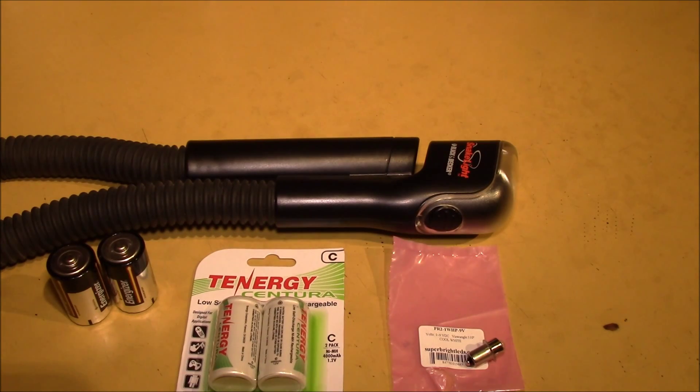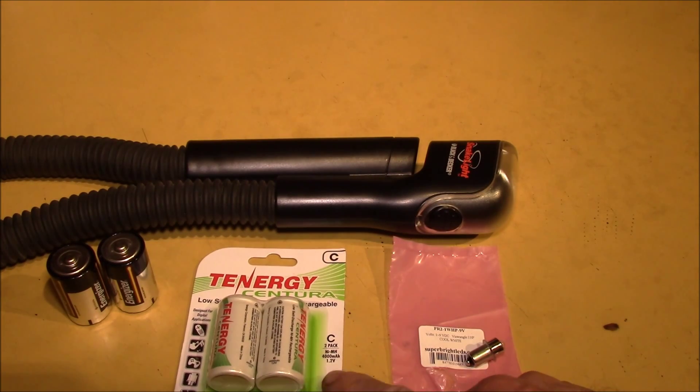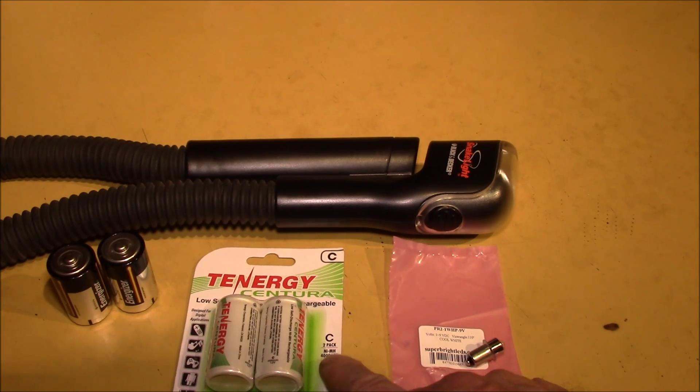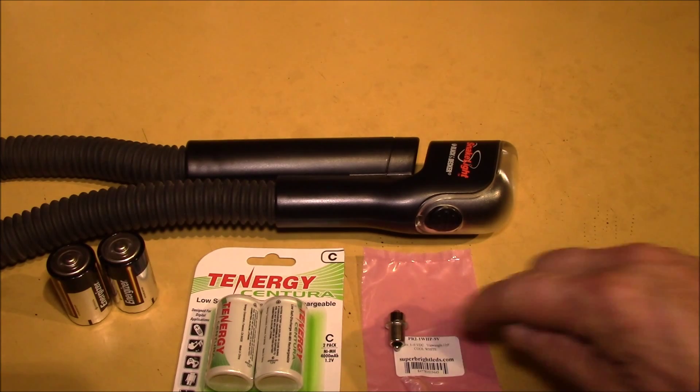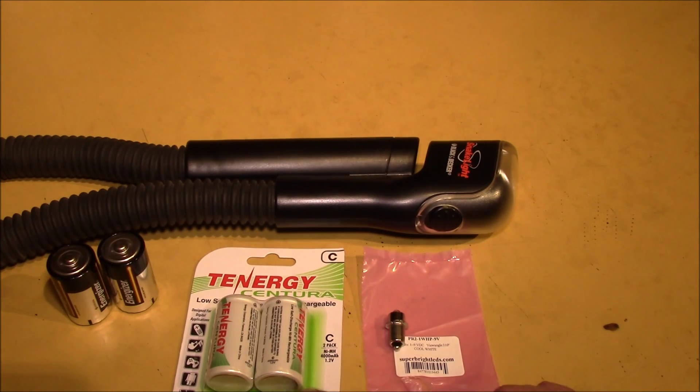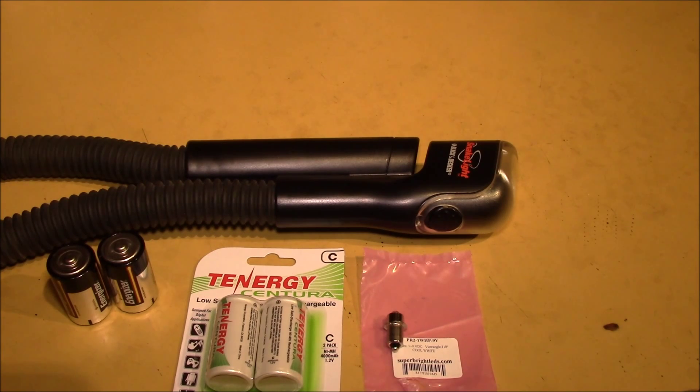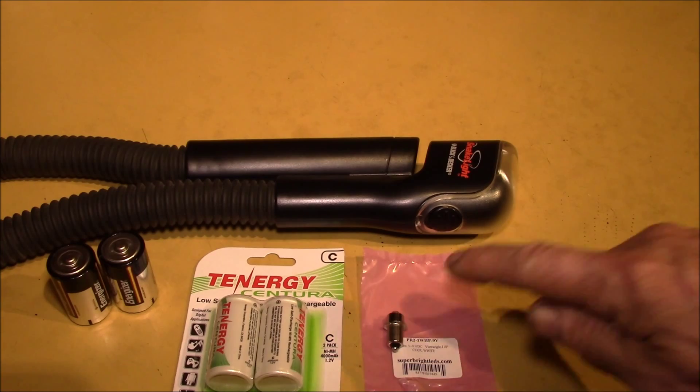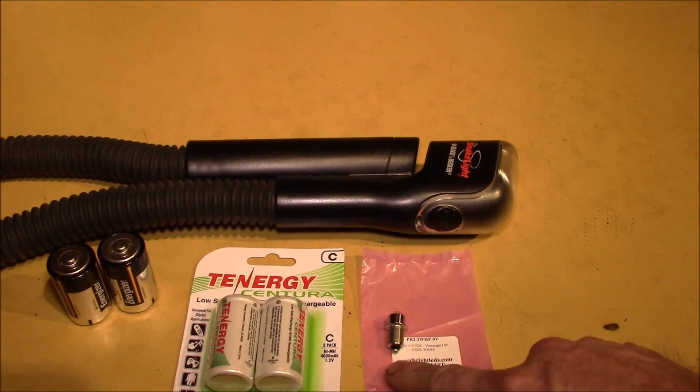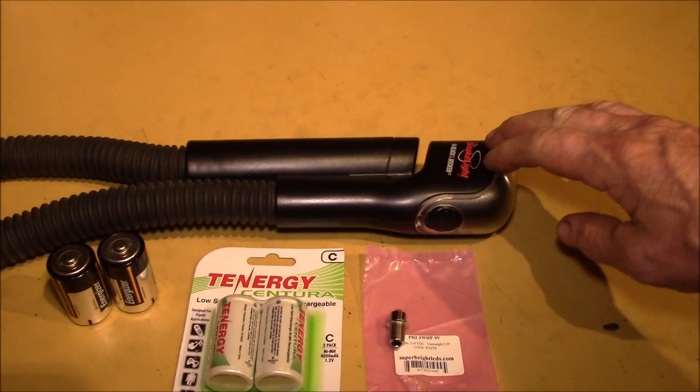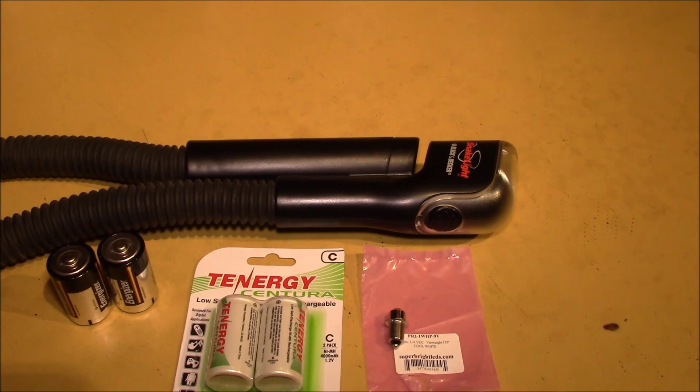Then I could put a pair of nickel metal hydride D cells in there - 4000 milliamp hours. This bulb at 2.4 volts will pull about 400 milliamps, giving me an 8 to 10 hour runtime. I can put out more than twice the light with twice the runtime of the new model. This is $11, that's $9, about $20 total, so I can save $15 over the new snake light and have a better light to boot.